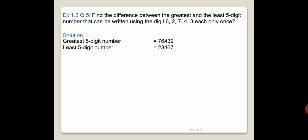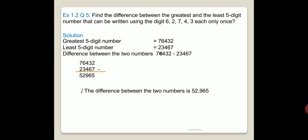What we have to do? We need to find the difference. So difference between the two numbers will be equal to 76432 minus 23467. When you subtract them, you will get 52965, and that will be the answer.